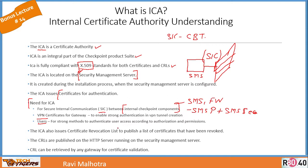ICA also issues a Certificate Revocation List (CRL). A CRL is simply a list where all certificates that are no longer in use are enlisted. CRLs are published on the HTTP server running on the Security Management Server, and the CRL can be retrieved by any gateway for certificate validation. So in summary, ICA resides on the Security Management Server, is created during its installation, and its main job is to issue certificates used in the SIC process as well as by VPN gateways and users.